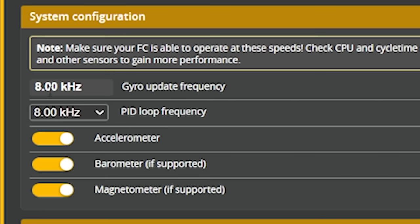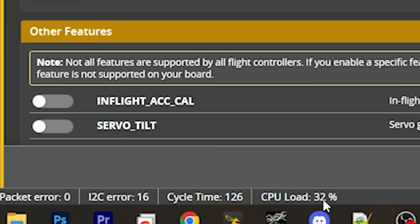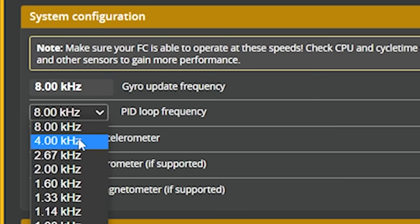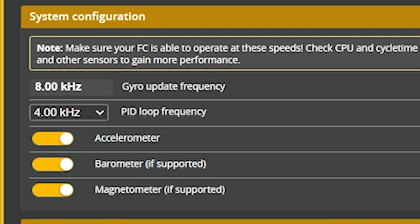The PID loop by default runs at the same rate as the gyro update frequency — so we see 8k here and 8k here. It is possible to run the PID loop slower than the gyro update frequency, and the main reason you would want to do that would be if your CPU load was too high. If it is too high, you can reduce your PID loop frequency from 8k to 4k, which causes the PID loop to run slower and lowers CPU utilization. It's best to run the PID loop at the gyro update frequency if possible.